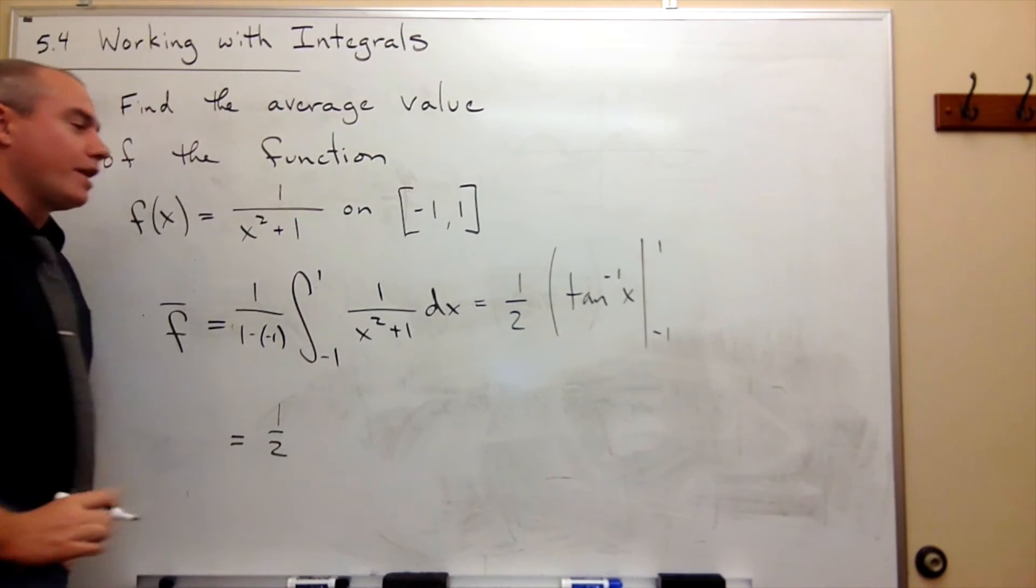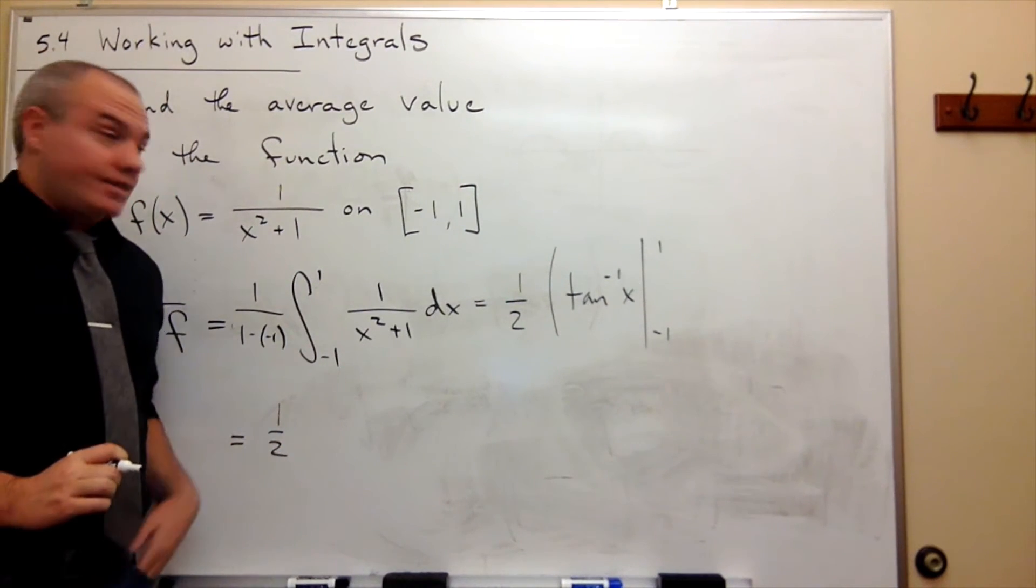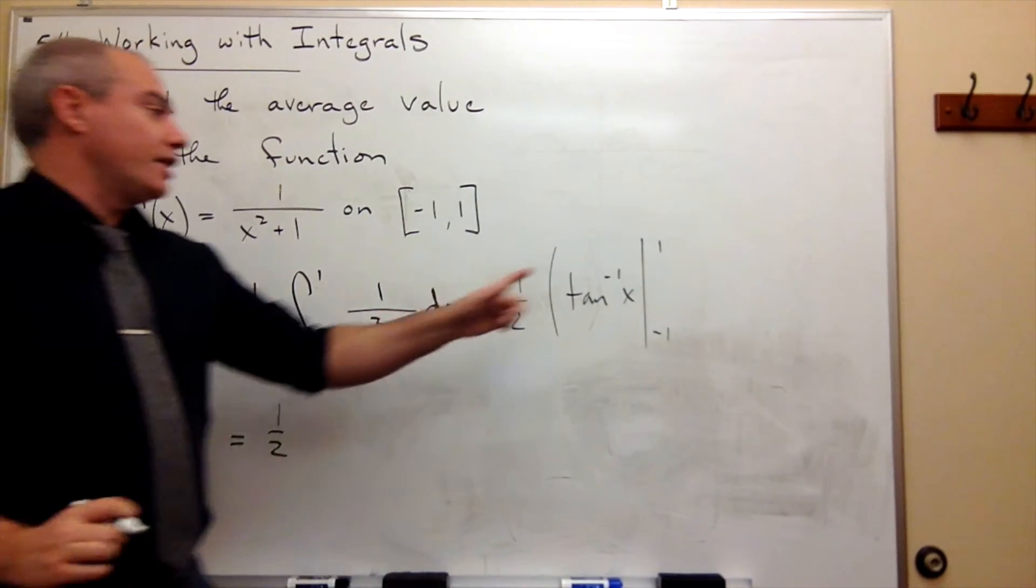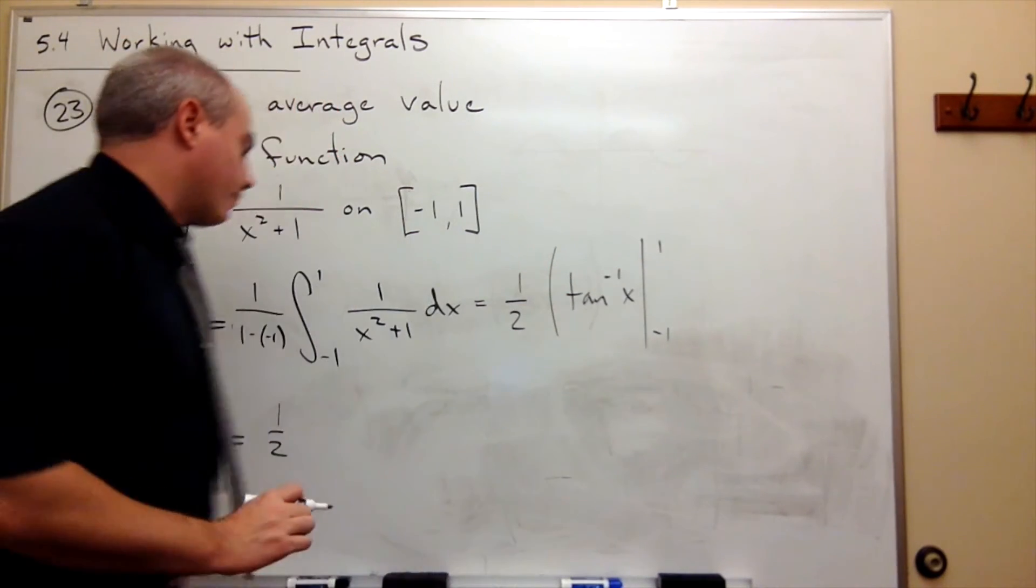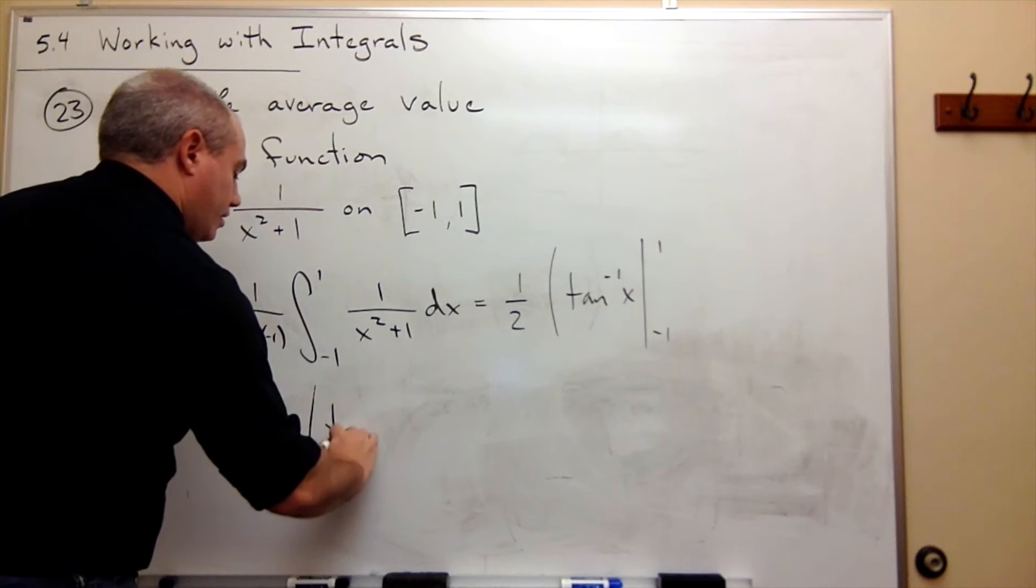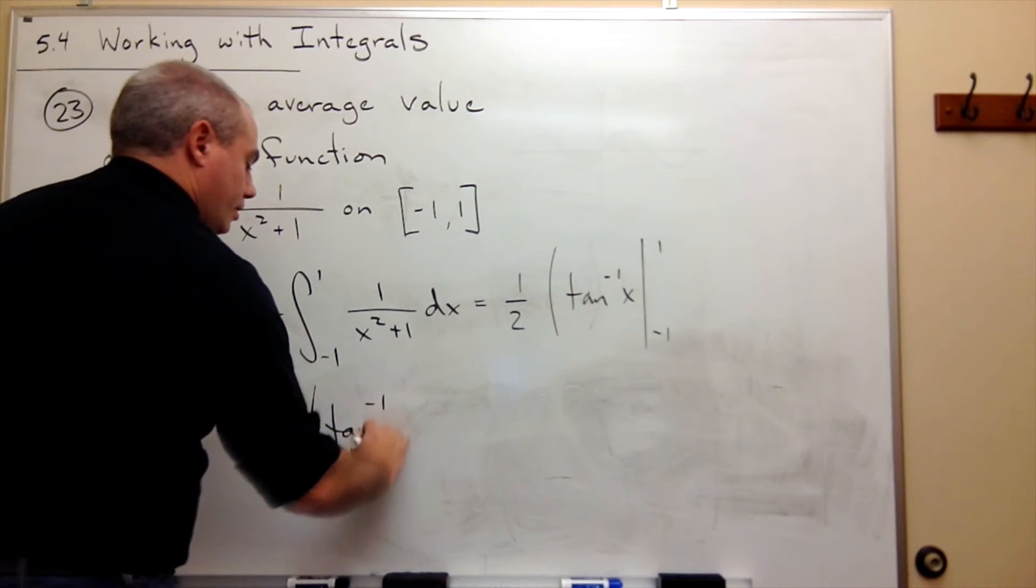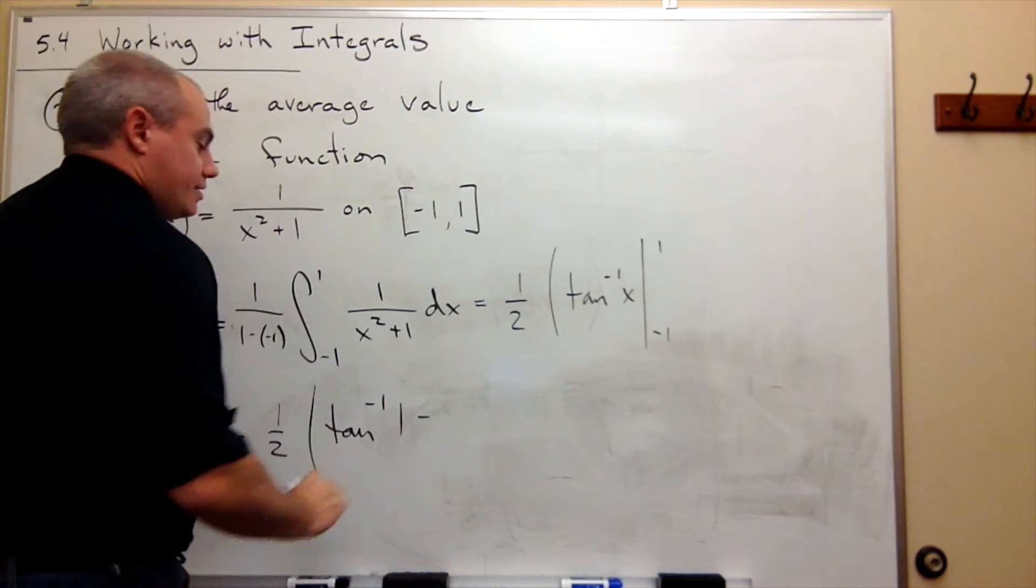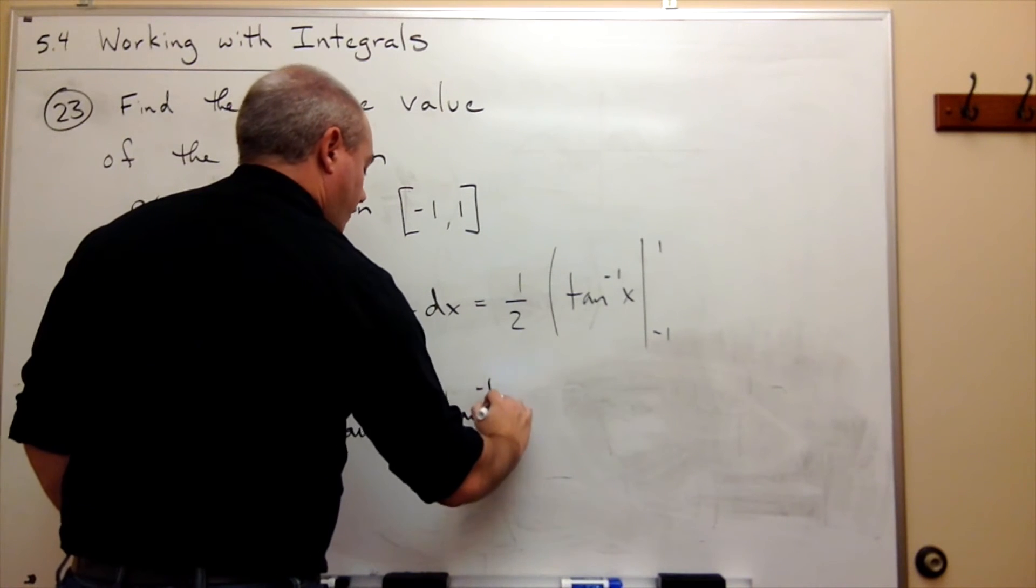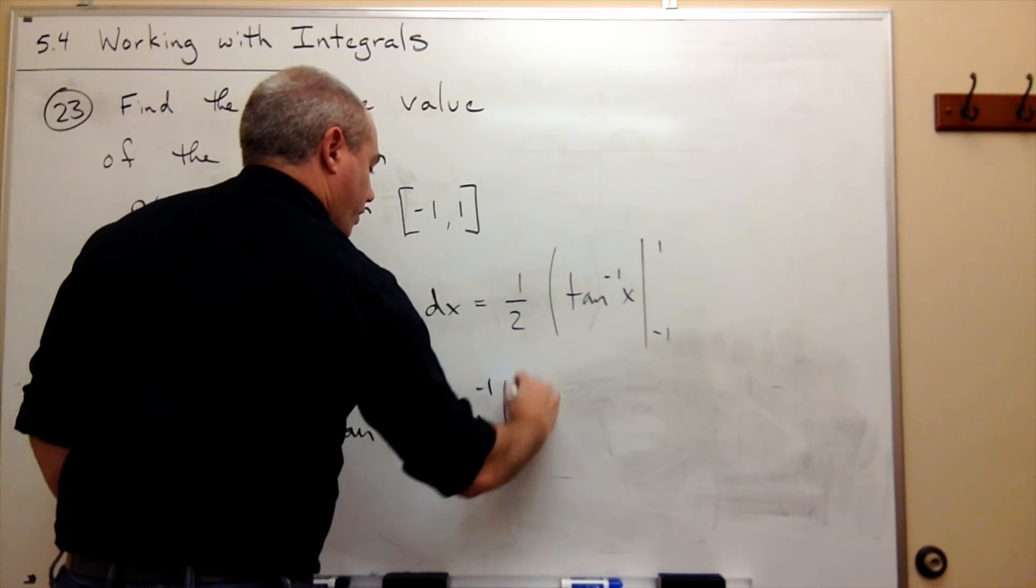So we still have that 1 half out front, and then we're going to plug in 1 and plug in minus 1, so we get tan inverse of 1 minus tan inverse of negative 1.